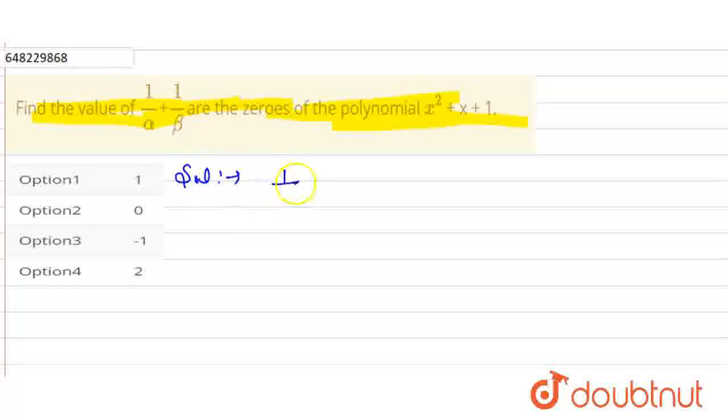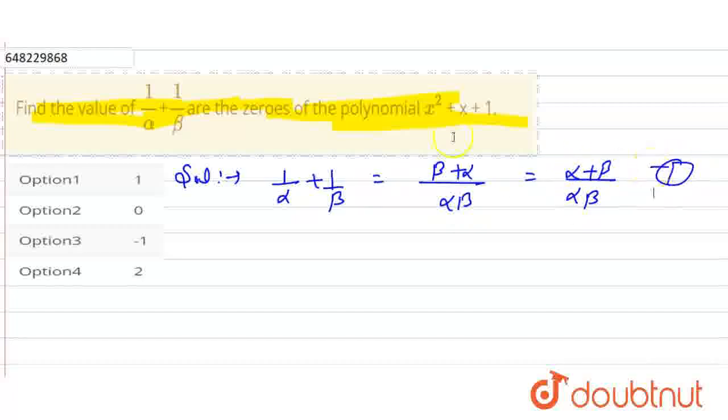So I have taken 1 by alpha plus 1 by beta. Taking the LCM, this will be beta plus alpha upon alpha beta. So I have alpha plus beta upon alpha beta, and we give this the name equation 1.